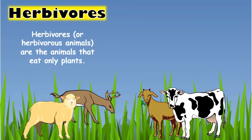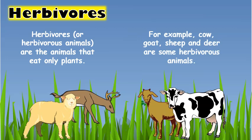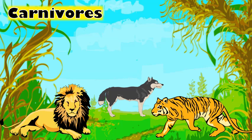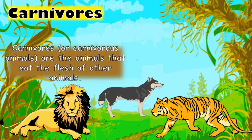Herbivores are also known as herbivorous animals. These animals eat only plants. For example, cow, goat, sheep, and deer are some herbivorous animals.